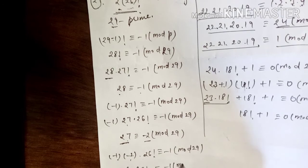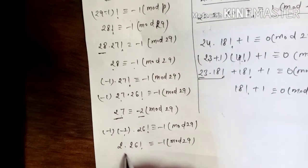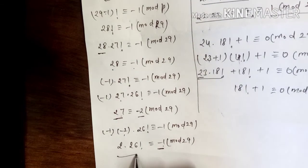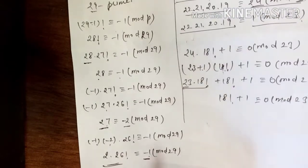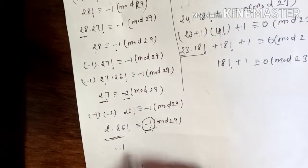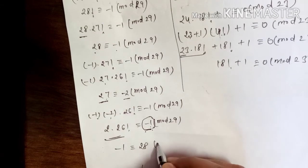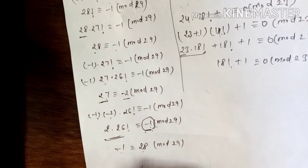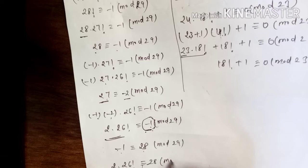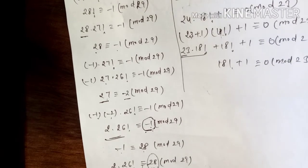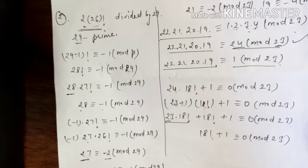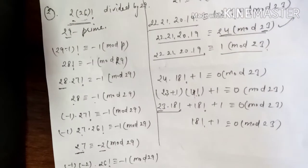So 2 × 26! ≡ 1... wait, from -2 × 26! ≡ -1 (mod 29), we get 2 × 26! ≡ 1... Actually 2 × 26! ≡ -1 (mod 29). Since remainder should be positive, and -1 ≡ 28 (mod 29), the remainder when 2 × 26! is divided by 29 is 28. These types of questions appear frequently in competitive exams and Wilson's theorem is the shortcut.